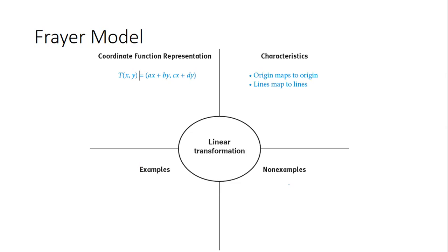A line is not going to turn into a curve; a line is not going to turn into a squiggle — a line is going to remain a line. Are we good with characteristics?